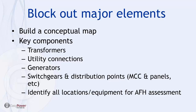As you identify pieces of your one-line, whether you know how they're connected or not, you more than likely know where they're located in your plant. These key components include transformers, utility connections, generators, all of the switchgear and distribution points including motor control centers and panels, and any type of ATSs or switching locations. You want to identify all of these as the equipment for arc flash hazard assessment.